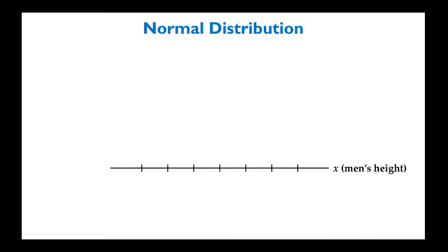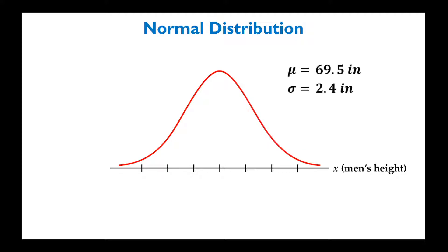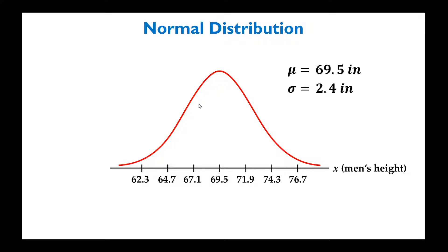For example, you might have men's height. Let's assume that men's heights are normally distributed, meaning they have a bell-shaped curve. Let's say we're given that the mean is 69.5 inches with a standard deviation of 2.4 inches. The mean is in the middle, and each interval represents one standard deviation. The further we go left or right, the fewer men have those heights, so the bulk of the population is concentrated in the middle.